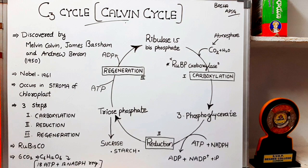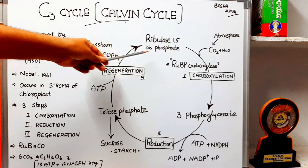The C3 Cycle occurs in all photosynthetic plants and is described under 3 steps. Those 3 steps are: carboxylation, reduction, and regeneration. Let us take them step by step.